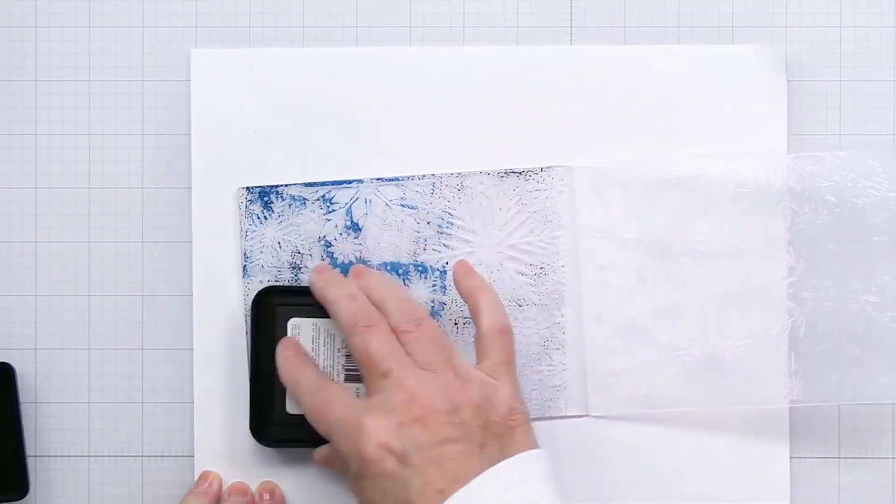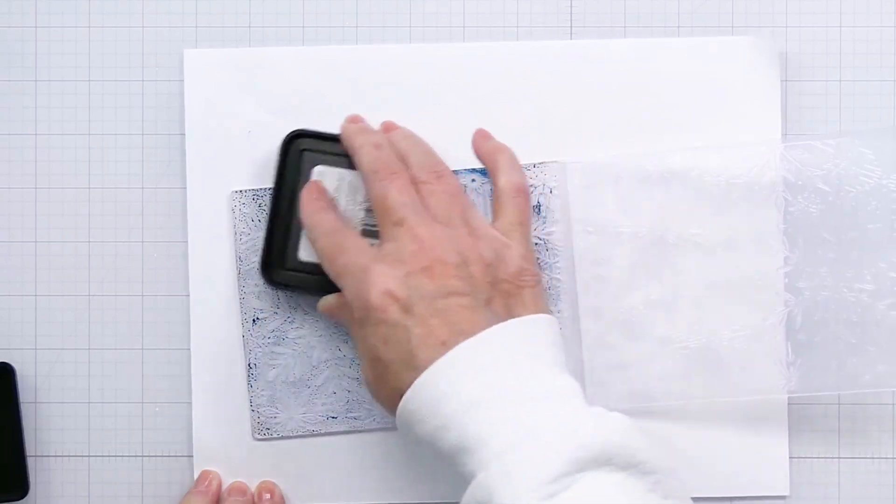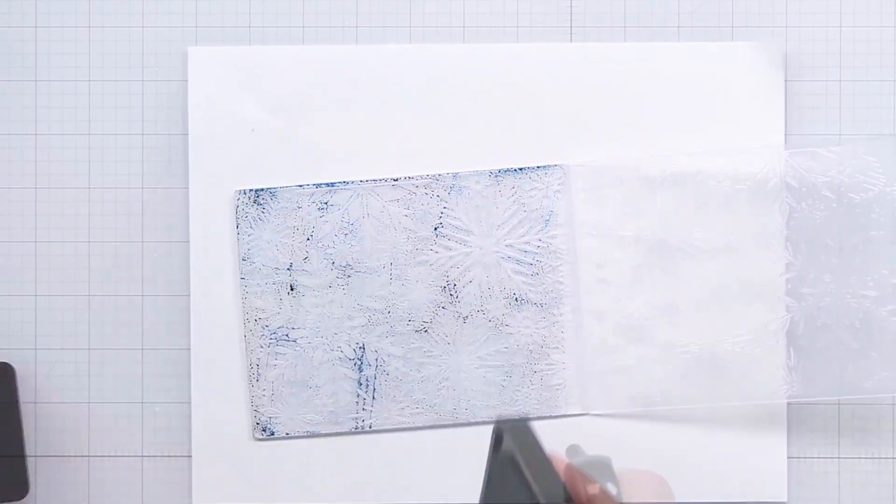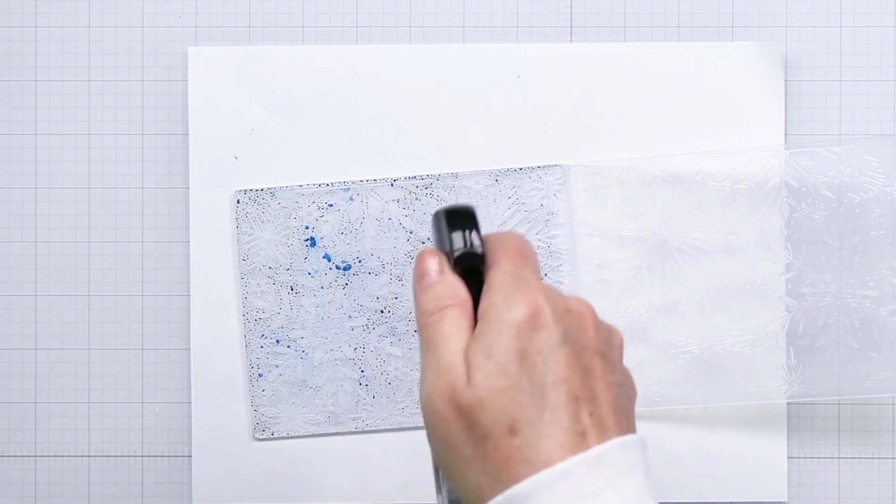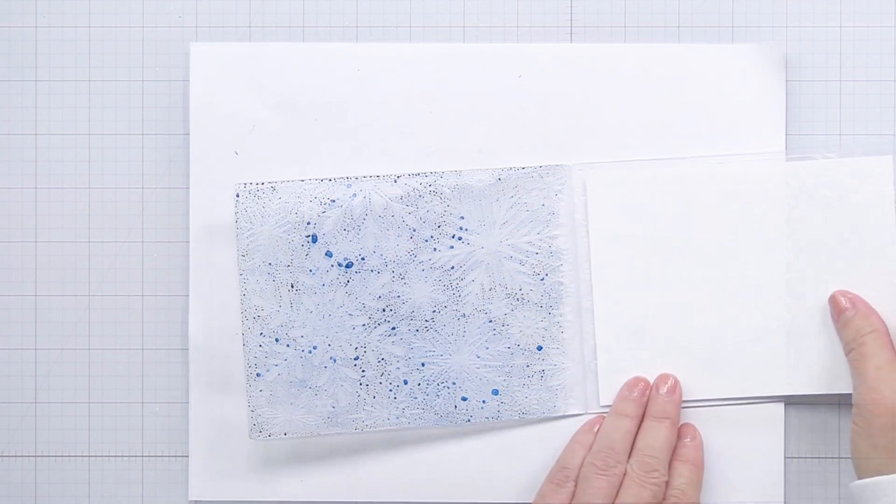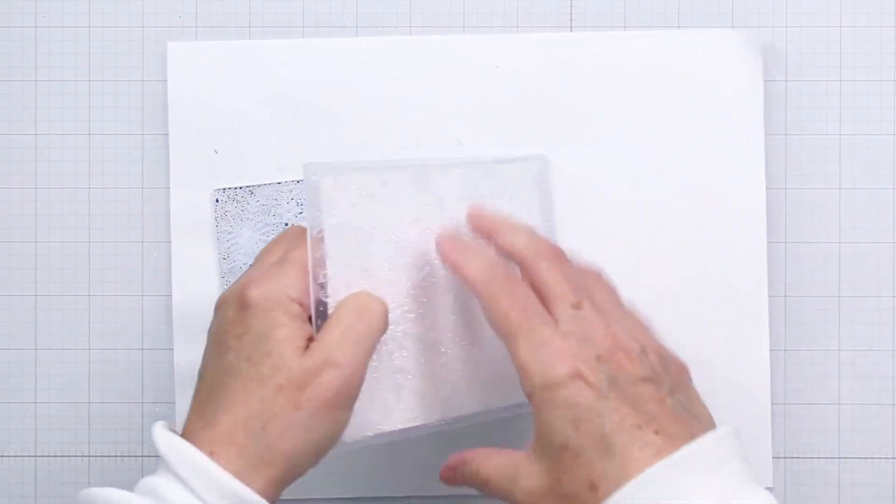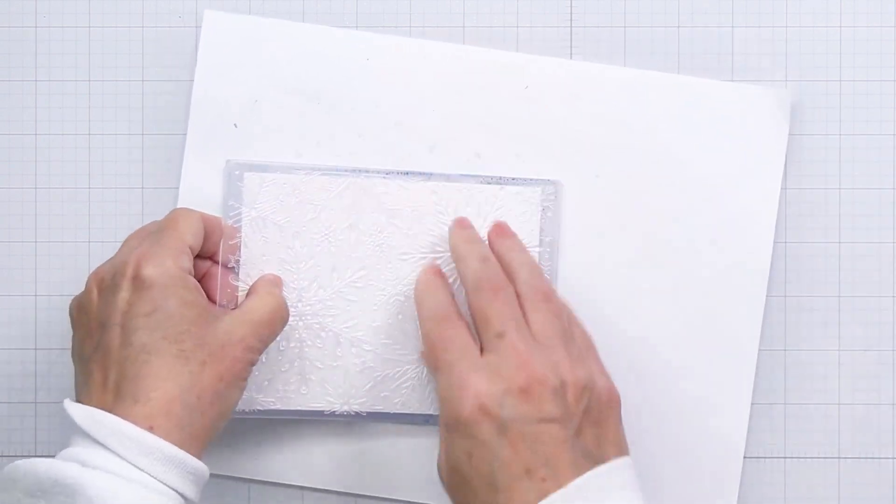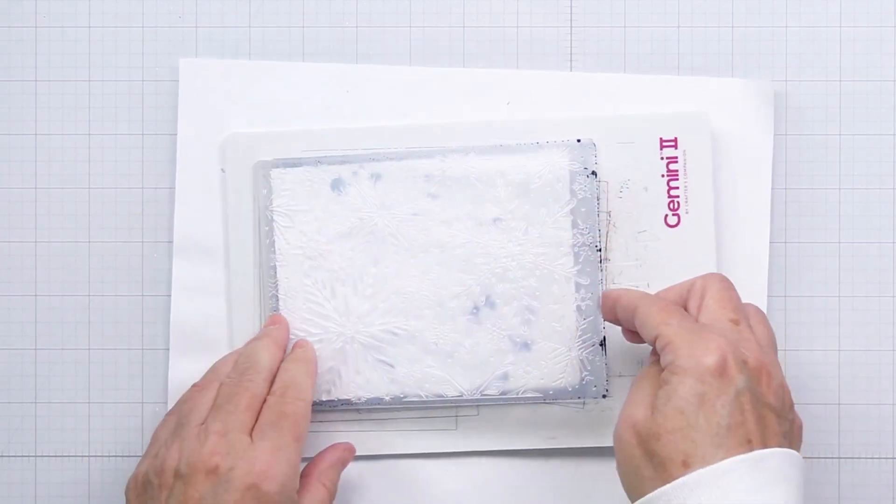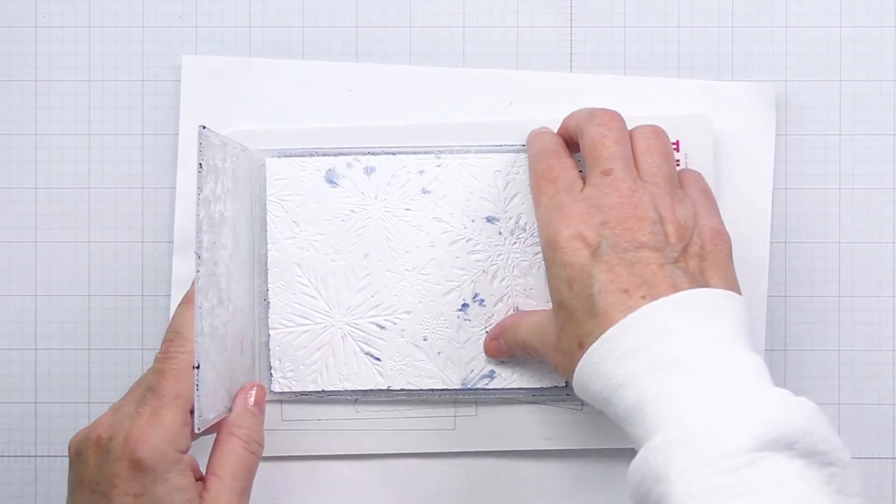Then I'll take my water spritzer bottle and spritz the ink with some water. Then I'll place my cardstock in the opposite side of the folder, close it up, and run that through my die cutting machine with the 3D embossing folder sandwich. This will transfer the ink onto the paper.